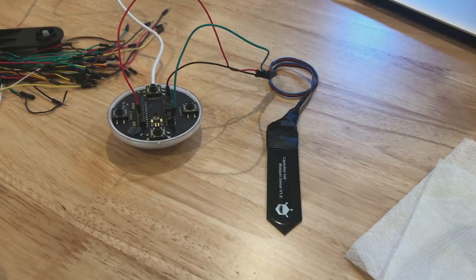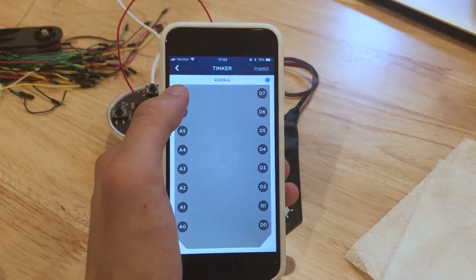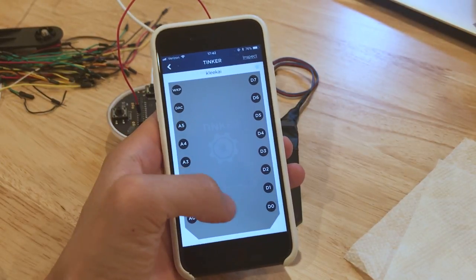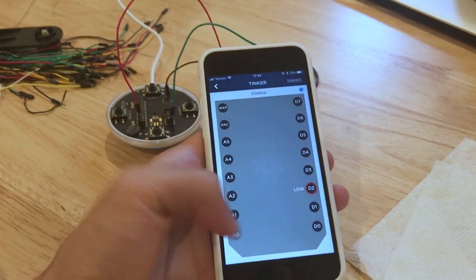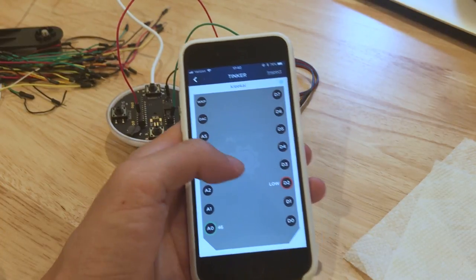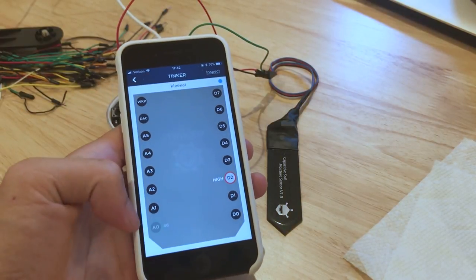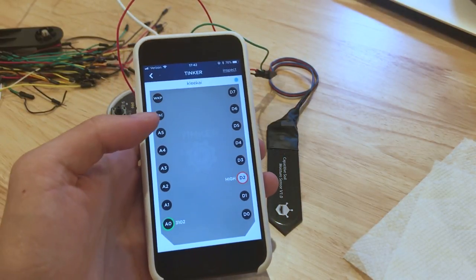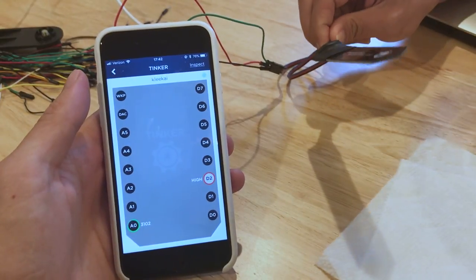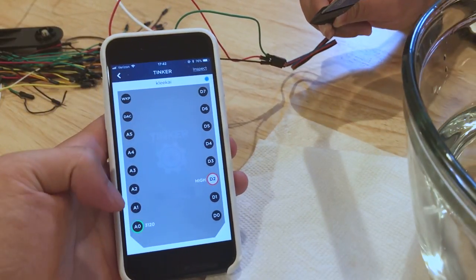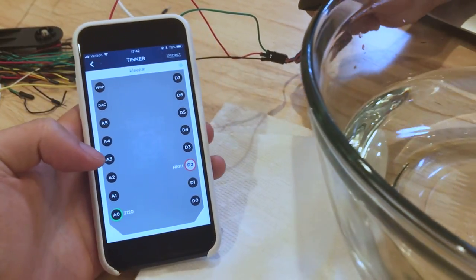Okay. Time to test the sensor. Again, super handy to have the Tinker app to check on the readings. Then set up A0 to be analog read. So it's on high. It's reading 3,100. What about now?